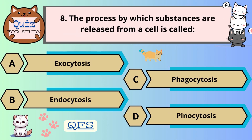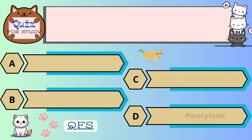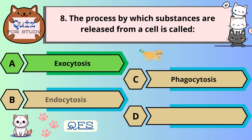Number 8. The process by which substances are released from a cell is called — the correct answer is A. Phagocytosis.